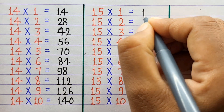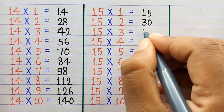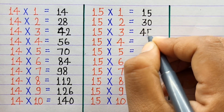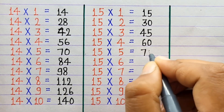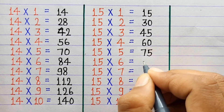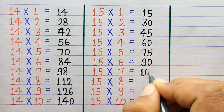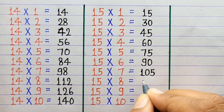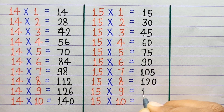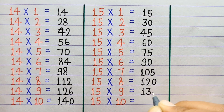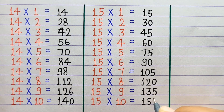15×1=15, 15×2=30, 15×3=45, 15×4=60, 15×5=75, 15×6=90, 15×7=105, 15×8=120, 15×9=135, 15×10=150.